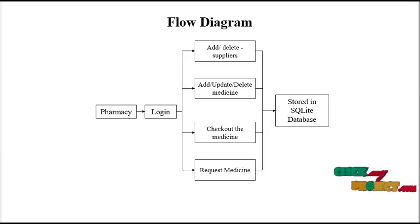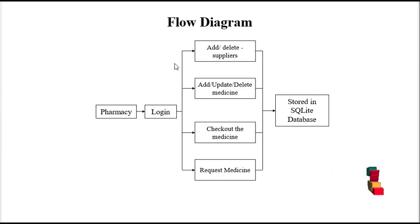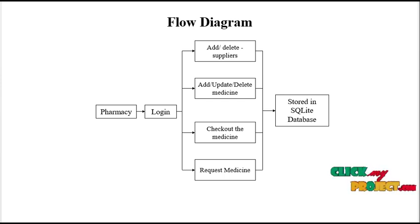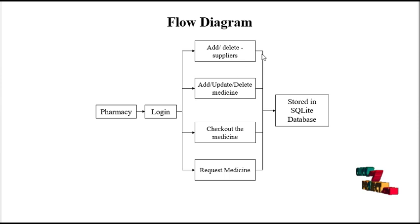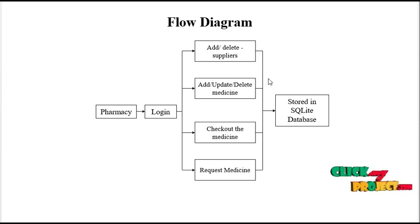Let's see the flow diagram of our project. First of all, we have the pharmacy and the login screen onto the signup screen. After the signup and login, go to the main screen. On the main screen we have 4 to 5 types of items.